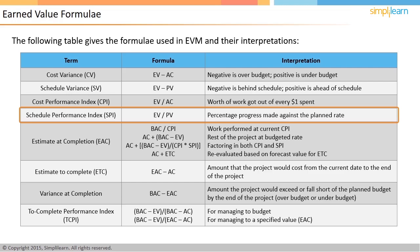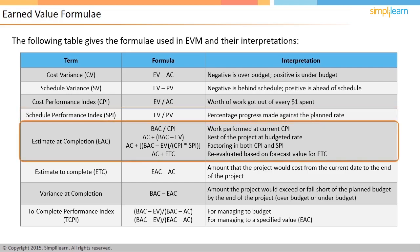The estimate at completion (EAC) can be calculated in different ways depending on how cost and schedule variances are expected to play out for the rest of the project. BAC divided by CPI is used if the current cost performance is expected to continue. AC plus BAC minus EV is used if the rest of the project will be managed at the budgeted rate. AC plus (BAC minus EV) divided by the product of CPI and SPI is used to factor in both cost and schedule variances. AC plus ETC is used if you want to reevaluate the project based on a new forecast.